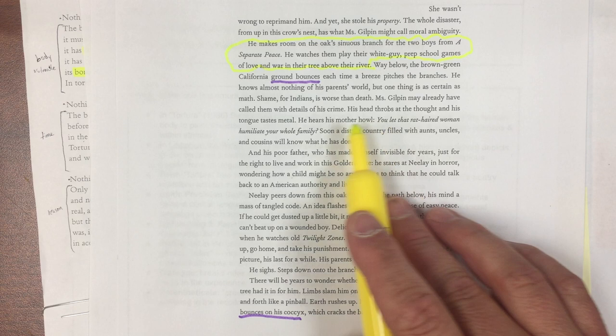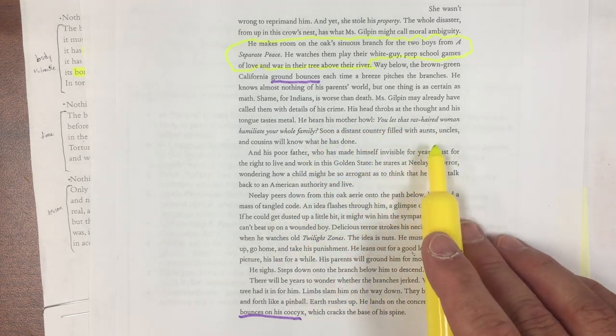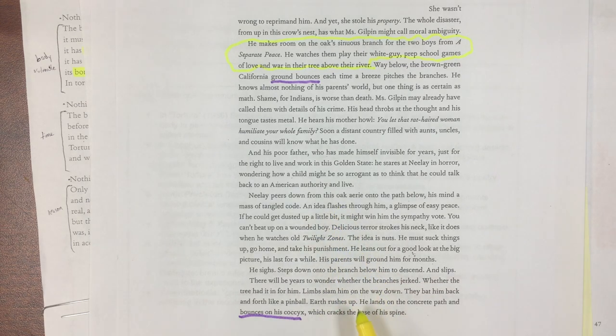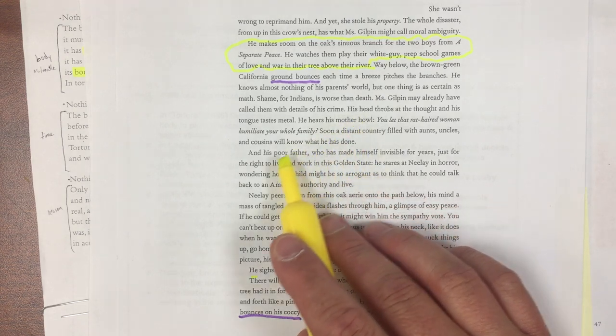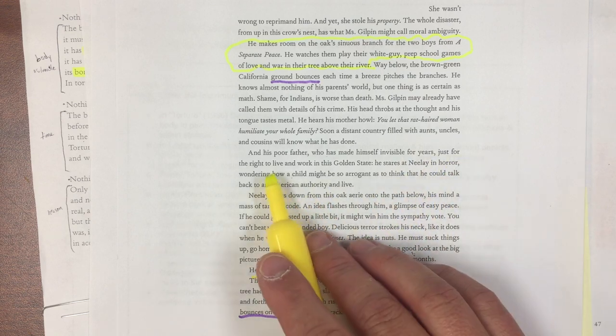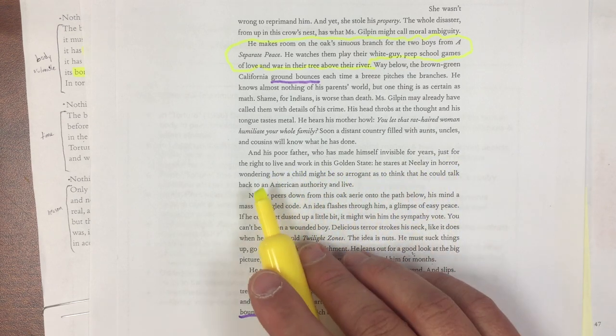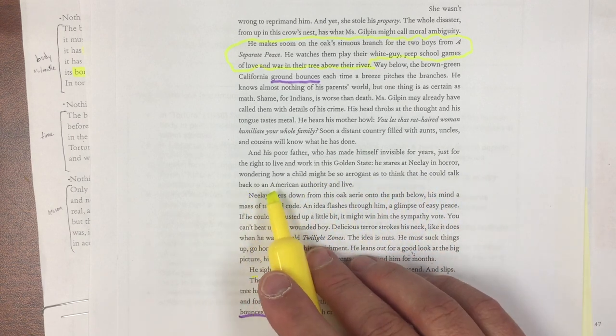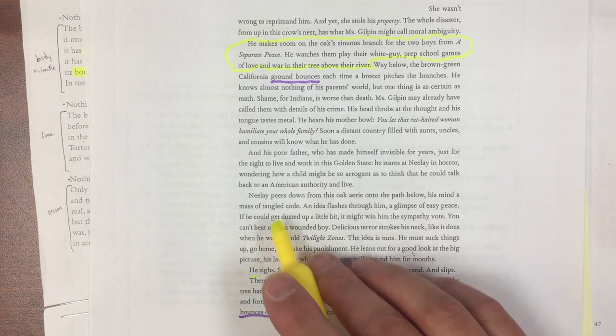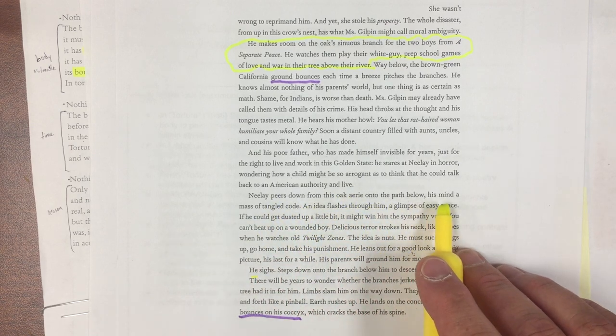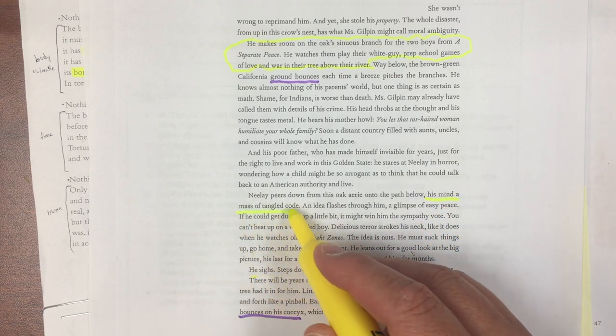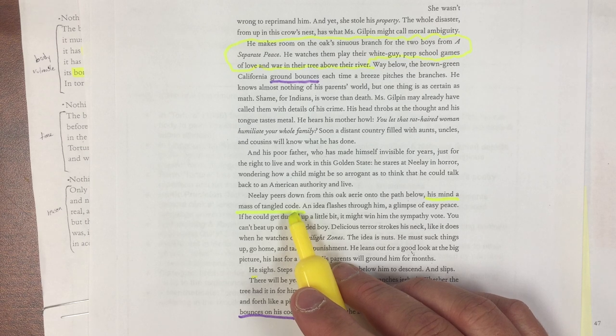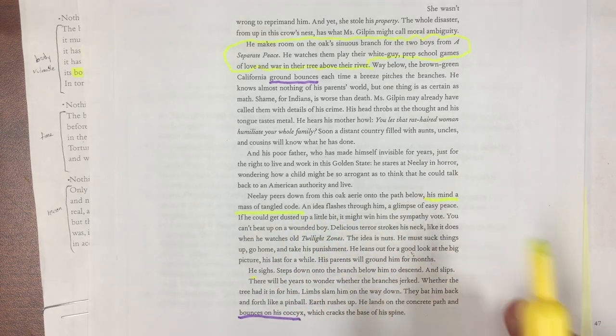Ms. Gilpin already has called him crime. You let that rat-haired woman. So this is the other one that I wanted to mention. I guess I'll have to read it. And his poor father, who has made himself invisible for years just for the right to live and work in the Golden State. He stares at Nile in horror, wondering how a child might be so arrogant as to think he could talk back to an American authority and live. Nile peers down from his hokey aerie into the path below, his mind a mass of tangled code. There is a clear metaphor. And that has to do with his character, because he will go on to become a computer programmer that changes the world.